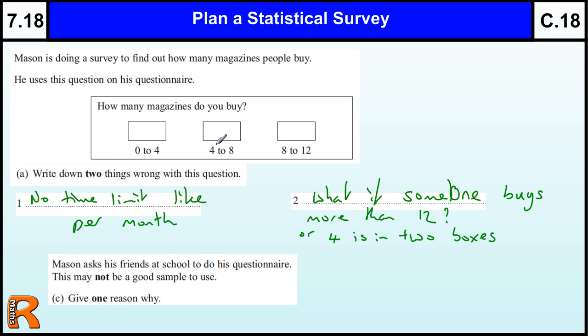If you have to rewrite this better, you would say per month or week or something, and you would go probably 0 to 3, 4 to 7, 8 to 11, and then have another box saying 12 plus. That would cover everything.